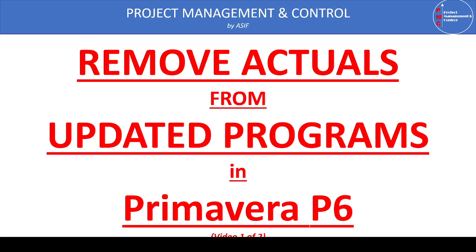Once I received the updated program from the approved design program, I got a request asking: what is the status of progress three months before, as per this approved baseline program? The first thing that came to mind was to remove the actuals from the current updated program, take a snapshot at that three-month-prior date, and then insert it into the approved baseline program.